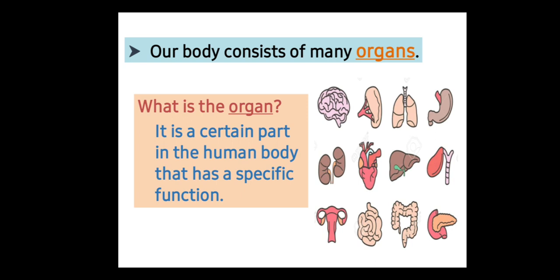We can say about these parts that they are organs. So our body consists of many organs. What are the organs in the human body? We have eyes, nose, ears, mouth, the skin, arms, and legs. All of these are organs.